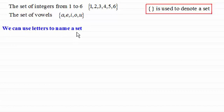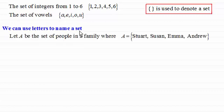Now we can use letters to name a set. For example, let A be the set of people in a family, where A is equal to the set of people Stuart, Susan, Emma and Andrew.